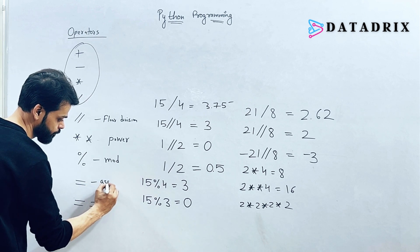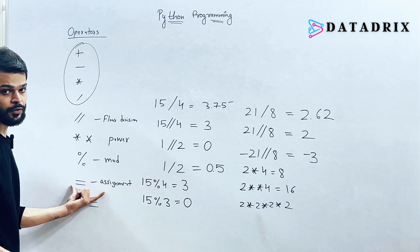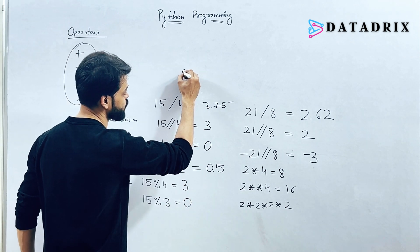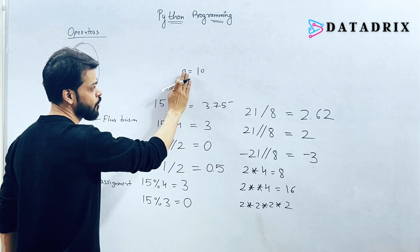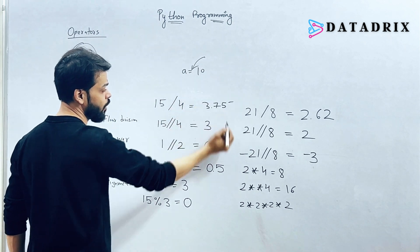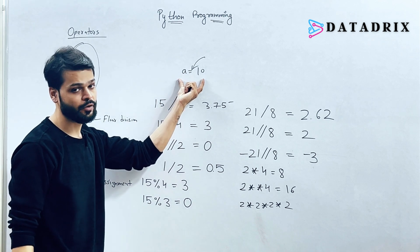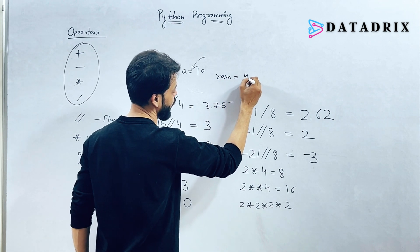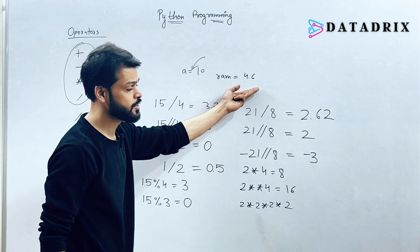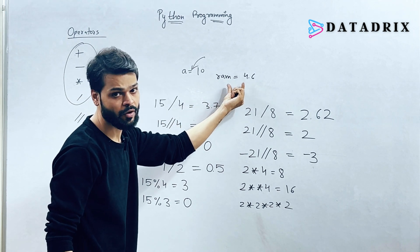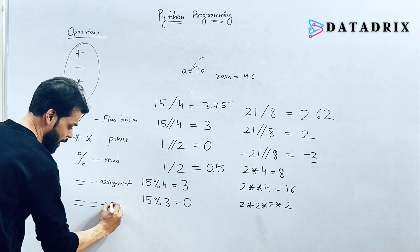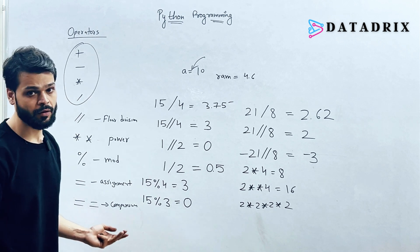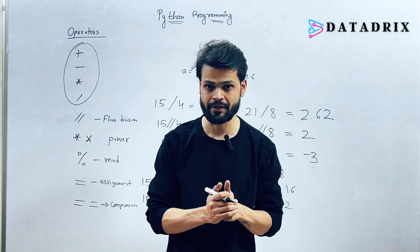The assignment operator (=) assigns values to variables. As discussed in the variable section, 'a = 10' assigns the value 10 to a using the assignment operator. Another example: 'ram = 4.6' assigns 4.6 to the variable ram using the equals-to assignment operator.